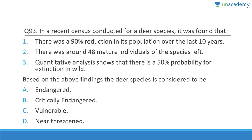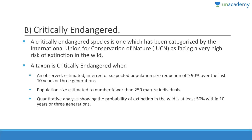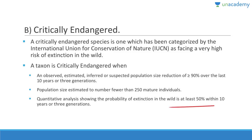Question 93: A 90% reduction in population over 10 years, only 48 mature individuals remaining, and a 50% probability of extinction in the wild — this qualifies as critically endangered. Critically endangered criteria: population reduction of more than 90% over 10 years or three generations, population size less than 250 mature individuals, or at least 50% extinction probability within 10 years.